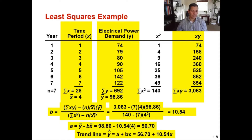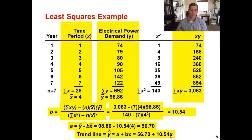Now calculate a. Using the formula: a equals y-bar minus b times x-bar, which is 98.86 minus 10.54 times four. That gives you a equals 56.70. So your trend line is y-hat equals a plus bx, which is y-hat equals 56.70 plus 10.54x. The x is the unknown variable we'll substitute in for whichever future year we want to forecast.